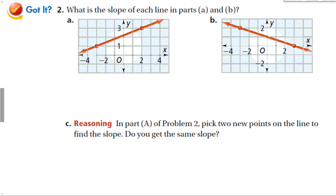For the next set of lines: starting from a clearly identified point on the coordinate plane, going up 2 and right 5 gives a slope of 2/5. For the second line, going down 2 over 6 gives −2/6, which reduces to −1/3. Always reduce fractions, and place the negative sign in front rather than in the denominator.